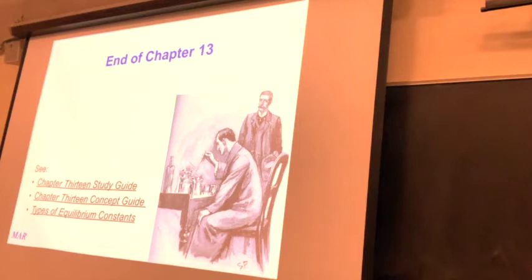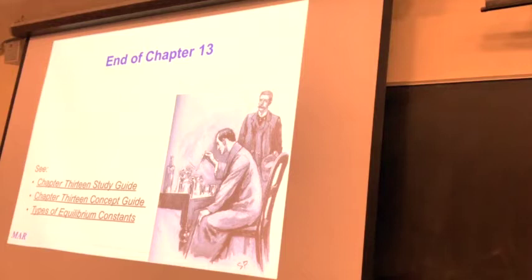We're going to see lots of different types of K coming up. In this chapter we saw K sub C, which was the equilibrium based on concentration, and we'll also see K based on pressures. Next chapter we'll see some different ones. This list covers all the K types we'll see, so if you forget what Kp is, you can look back at it.